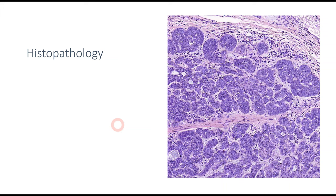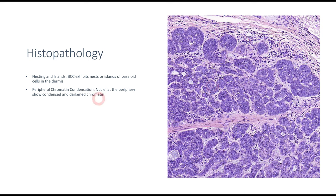Talking about histopathology of basal cell carcinoma: because there are different subtypes, histopathological features vary, but the general features seen in most subtypes include nesting in islands of basaloid cells in the dermis. Next, there is peripheral chromatin condensation, which you can appreciate in the nuclei — they appear darkened compared to normal tissue. At times there may also be stromal fibrosis, which is common in basal cell carcinoma though not always evident on the histopathological slide.